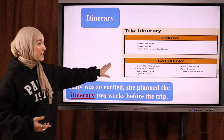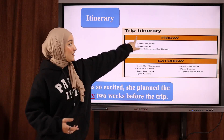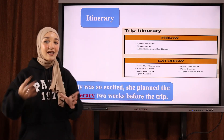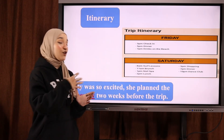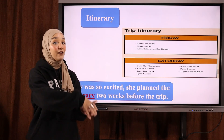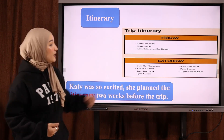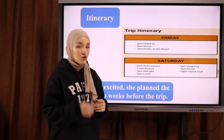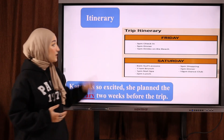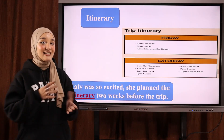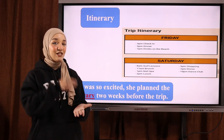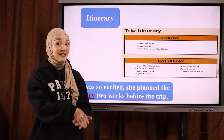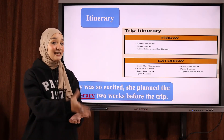Here's an example of a trip itinerary: Friday, 3 p.m. — check in, meaning you arrive at the hotel (تصل إلى الفندق); 5 p.m. — dinner (عشاء); 7 p.m. — drinks on the beach. So this trip itinerary shows the activities you are going to do during the trip (خلال الرحلة — ماذا ستفعل خلال الرحلة).